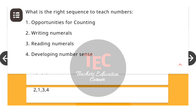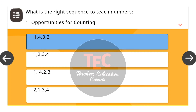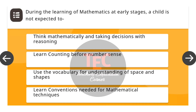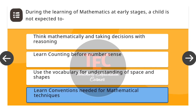Next question: What is the right sequence to teach numbers? The options are: opportunities for counting, writing numerals, reading numerals, developing number sense. The correct answer is 1, 4, 3, 2. Next question: During the learning of mathematics at early stages, a child is not expected to — the correct answer is learn conventions needed for mathematical techniques.